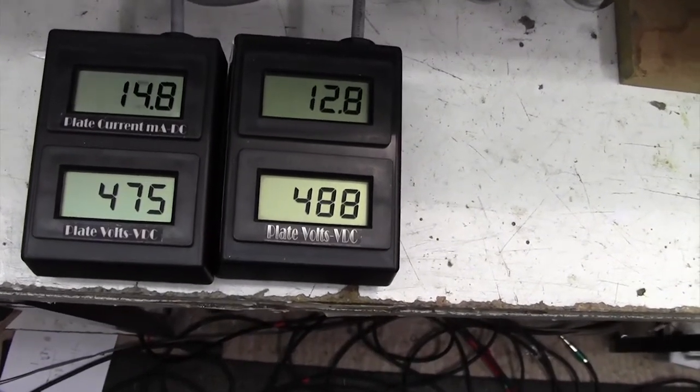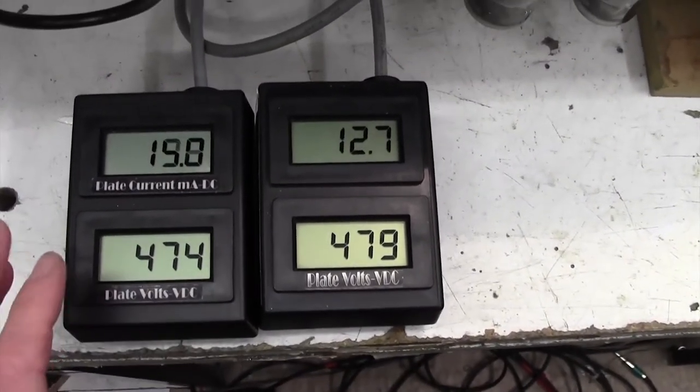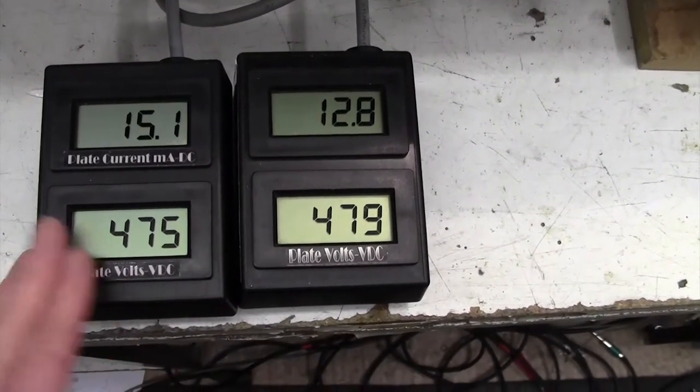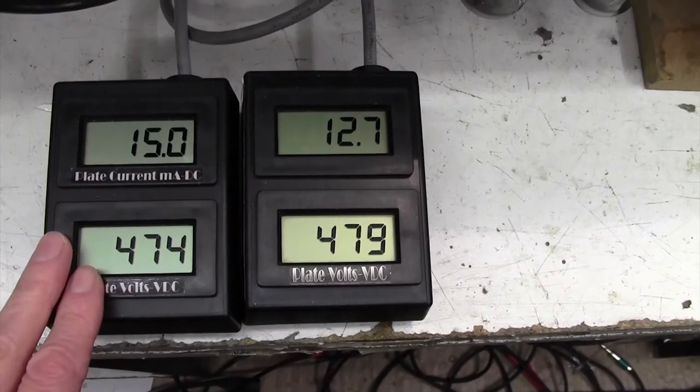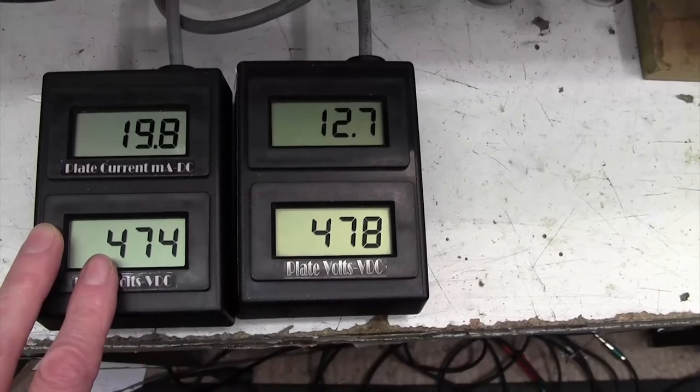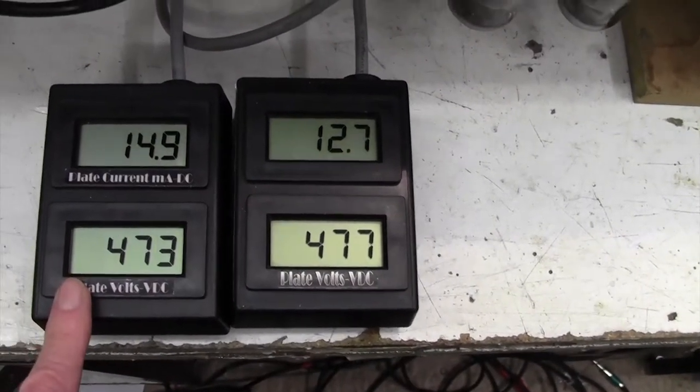So you will need a bias meter to set up this amplifier. These are about a hundred dollars, a hundred pounds, or a hundred euros or similar amounts from Euro tubes. I like their bias meters very much.